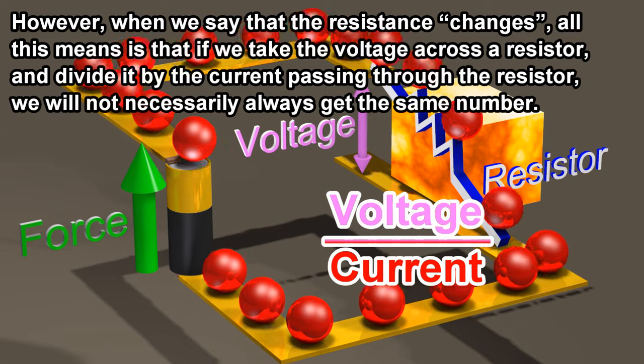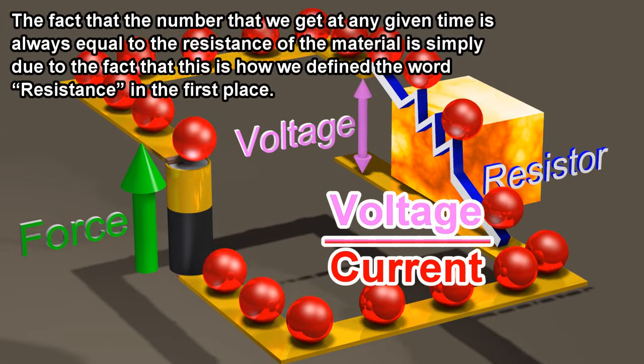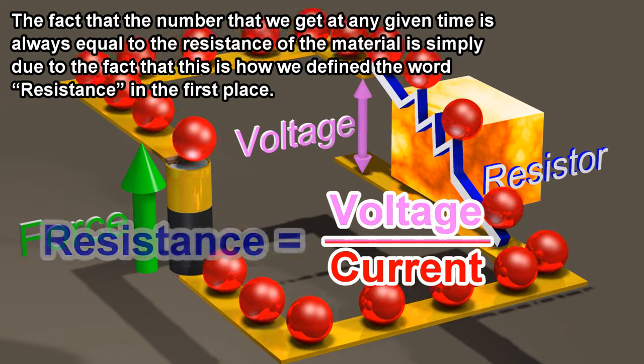The fact that the number that we get at any given time is always equal to the resistance of the material is simply due to the fact that this is how we defined the word resistance in the first place.